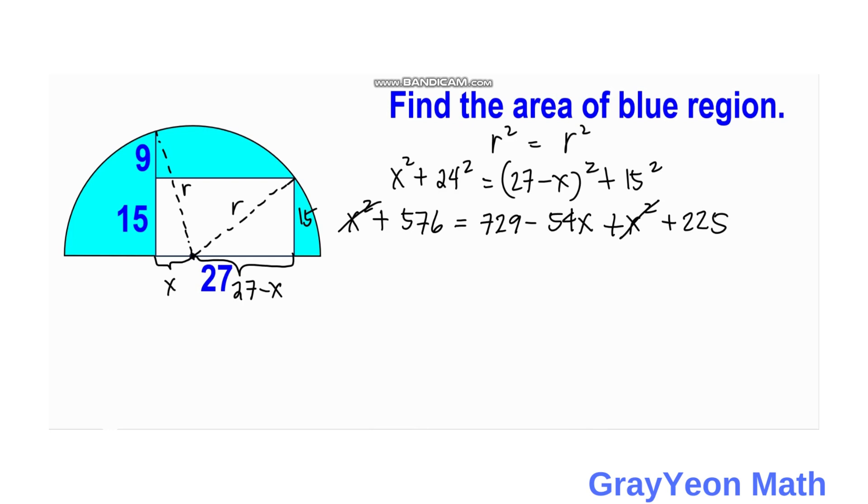Then we transpose this 54x to the left hand side. And therefore we have 54x is equal to 729 minus 576 plus 225. Then on the right hand side this gives us 378 is equal to 54x. And if we divide both sides by 54 we have x is equal to 7.